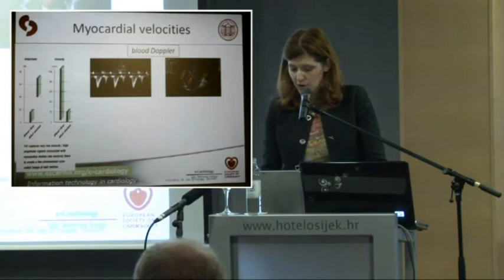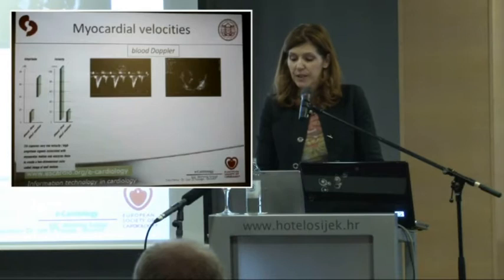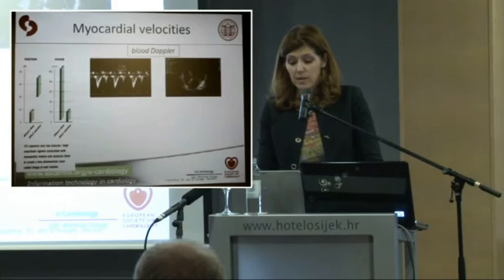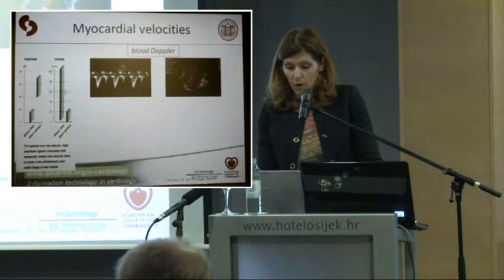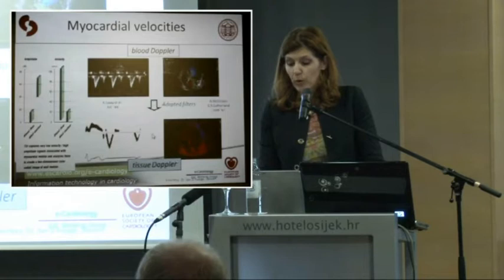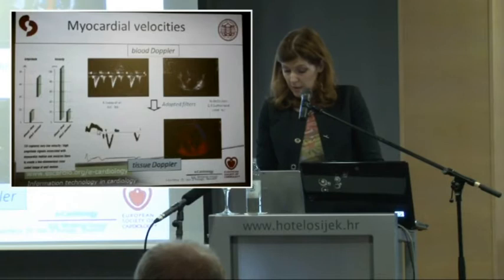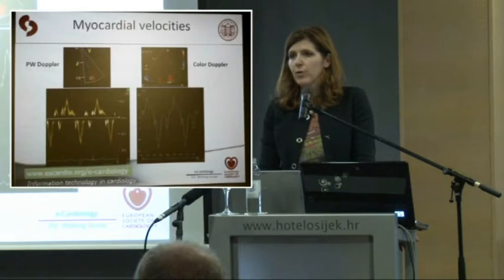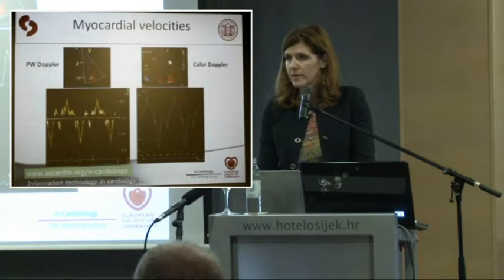The first attempt to get quantitative data on regional function started almost 30 years ago. Apart from assessing blood velocities, doctors tried to assess tissue velocities that were previously rejected or filtered by the machine — switching from blood to tissue, so to lower velocities but with higher amplitude. This allows us to extract velocity data from each part of the myocardium using pulse wave Doppler tissue data and color-coded data.